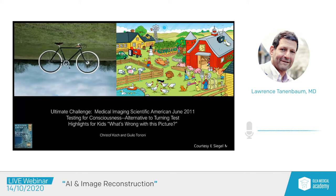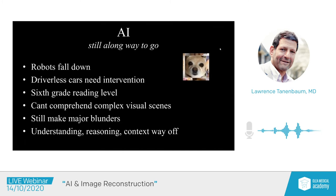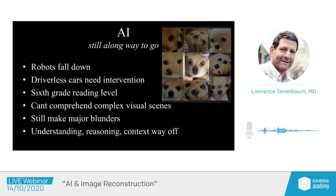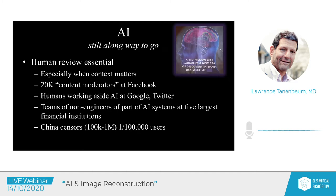Computer vision does remarkable things — it can tell chocolate chip ice cream from Dalmatians — but there are still circumstances when it makes major blunders, like trying to see a chihuahua in blueberry muffins. Fundamentally, understanding, reasoning, and context are pretty far off for machine learning applications. Human review is essential in all circumstances where there is applied intelligence. Domain knowledge is critical — I'm pretty sure if an anatomist or neuroradiologist were involved, the brain in those Los Angeles banners wouldn't be in there backwards. Human review is essential whenever context matters.